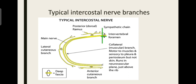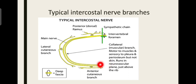Another terminal branch is the anterior cutaneous branch. Together, the anterior and lateral branches supply the entire anterior thoracic wall. Another branch is the muscular branch, which supplies the intercostal muscles. Thus we have covered all the branches of the intercostal nerve.